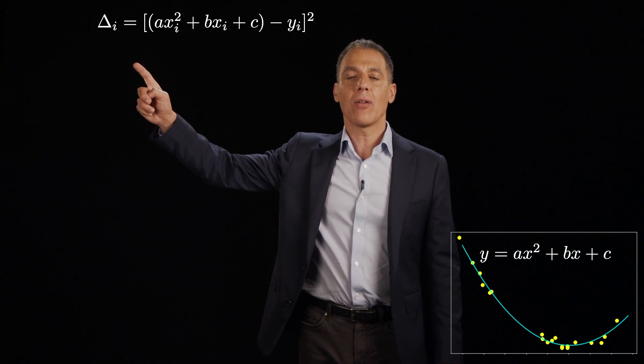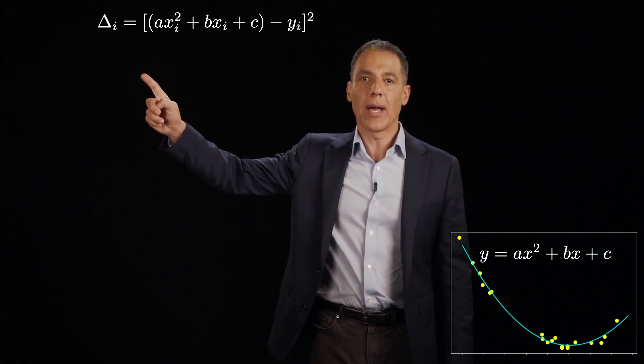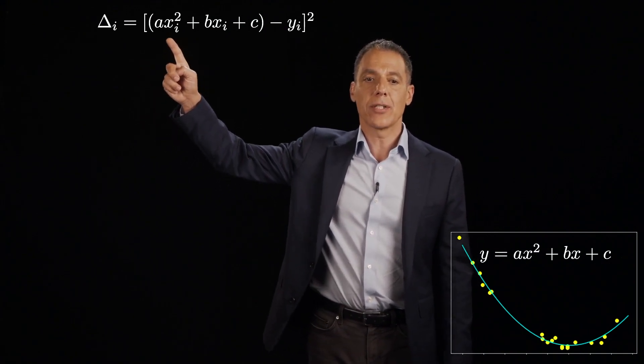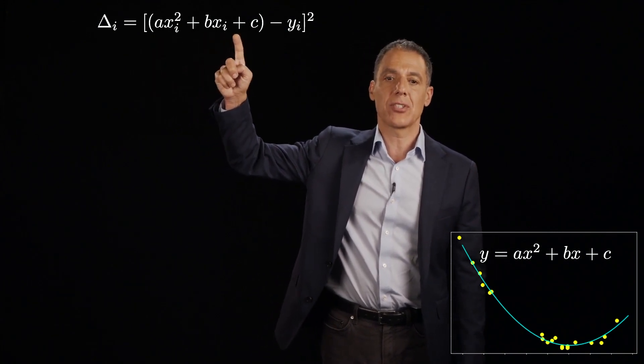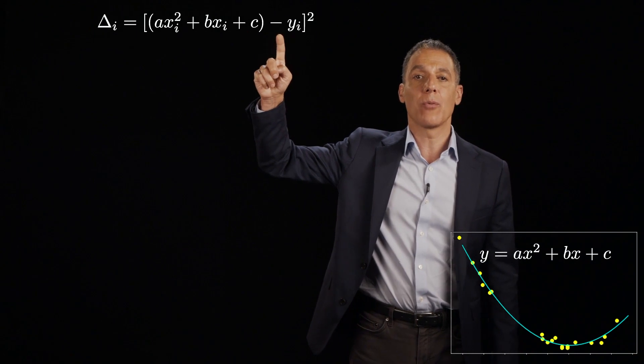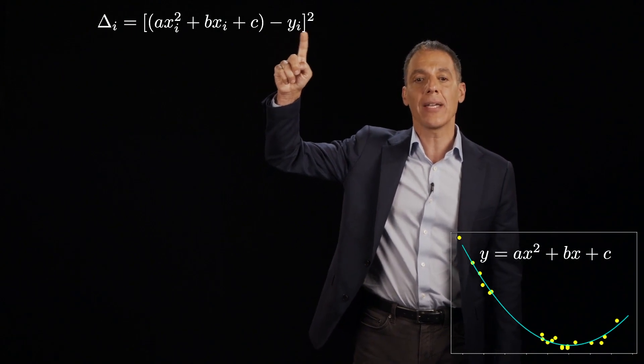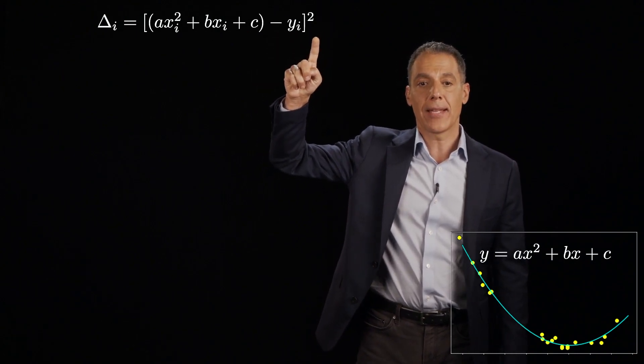Delta I is going to be the vertical distance between each Y coordinate and the corresponding model. So let's go back over to here. We have our parabola, of course, and we're simply going to ask for every point here, what is the vertical distance in Y relative to the underlying parabola?